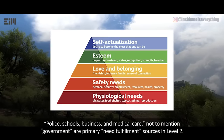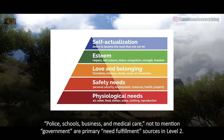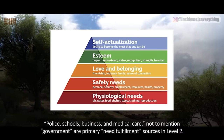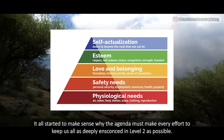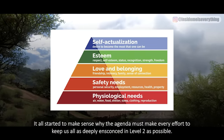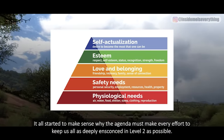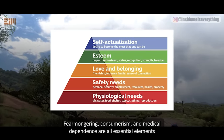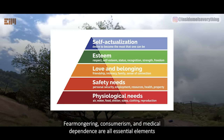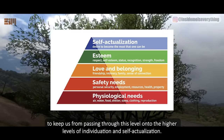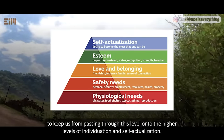Police, schools, business, and medical care — not to mention government — are primary need fulfillment sources in level 2. It all started to make sense why the agenda must make every effort to keep us all as deeply ensconced in level 2 as possible. Fear-mongering, consumerism, and medical dependence are all essential elements to keep us from passing through this level on to the higher levels of individuation and self-actualization.